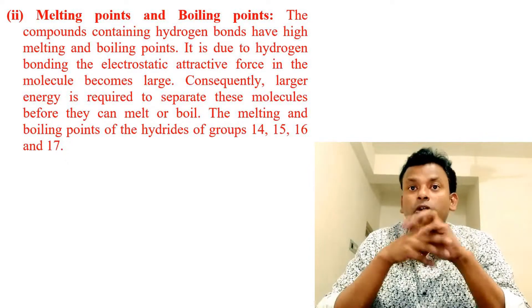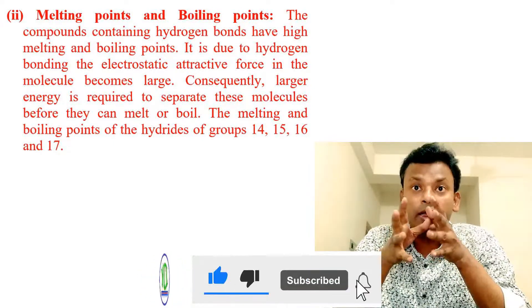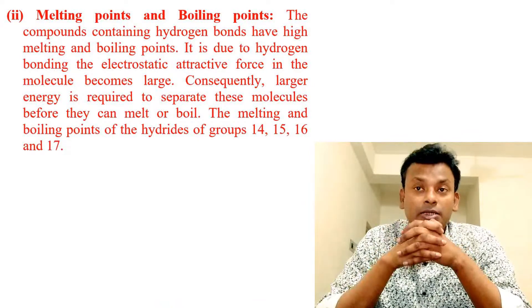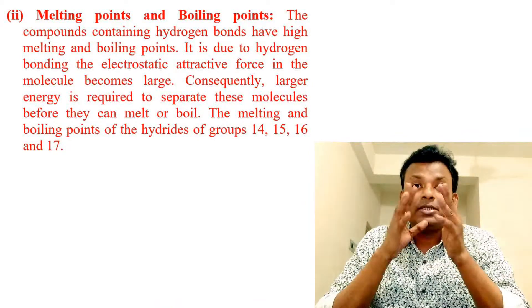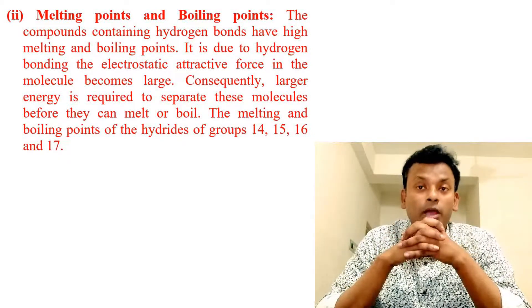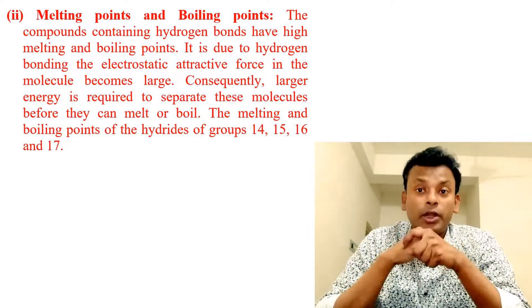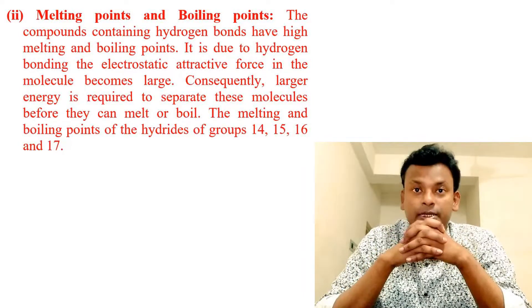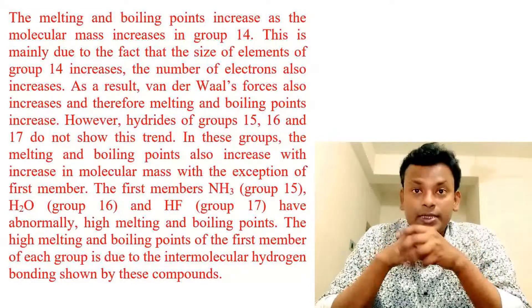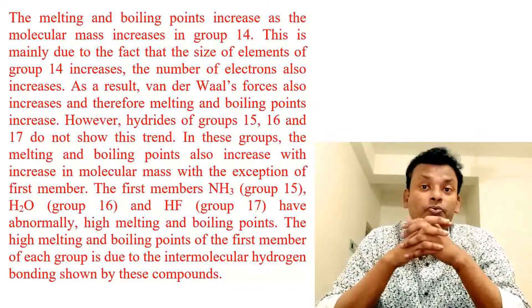Point two — melting point and boiling point: compounds containing hydrogen bonds have high melting points and boiling points. This is due to hydrogen bonding — the electrostatic attractive force between molecules becomes large, and consequently larger energy is required to separate those molecules before they can melt or boil. The melting point and boiling point of the hydrides of groups 14, 15, 16, and 17 follow specific trends.